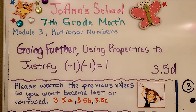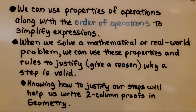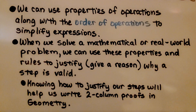We're at Lesson 3.5D, at the back of Lesson 3.5, and it's called Going Further. We're going to be using properties to justify that negative 1 times negative 1 is equal to 1. We can use properties of operations along with the order of operations to simplify expressions, and when we solve a mathematical or real-world problem, we can use these properties and rules to justify — that means give a reason why a step is valid. Knowing how to justify our steps will help us write two-column proofs in geometry.